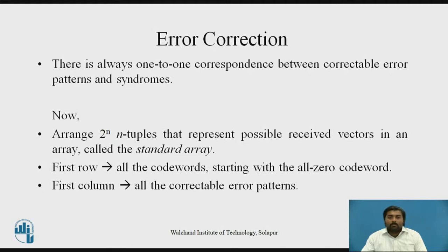Because of that, there is always a one-to-one correspondence between the correctable error pattern and the syndrome. As we have seen, we get the same syndrome from the corrupted codeword or from the error pattern using syndrome testing, and because of this one-to-one correspondence, we can correct the error. Now we have a number of codewords set, so let's arrange that codeword set into 2 raised to n n-tuples in array format, which is also called the standard array.